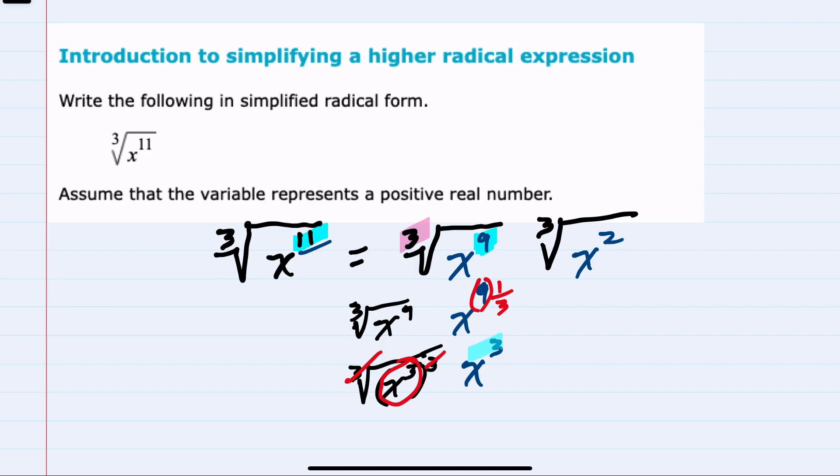Either way we think of this, that first portion has been simplified to be x to the 3rd power. And the remainder is still under this cube root. We have that x squared.